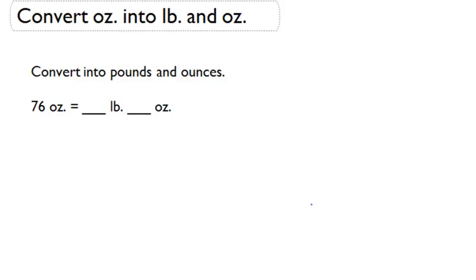Now let's talk about how to convert a number of ounces into the compound unit of pounds and ounces. Here, we want to convert 76 ounces into some amount of pounds and some amount of ounces.